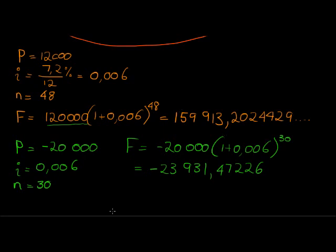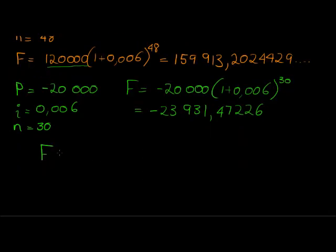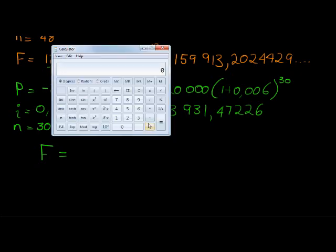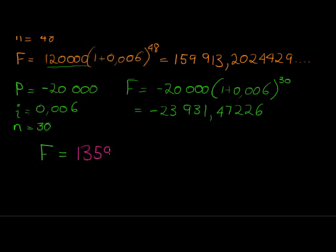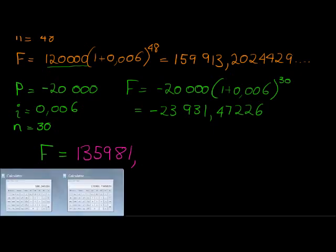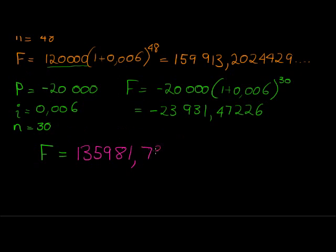If I go and take these two amounts and I add them together, that one already has the negative, let's see what we have. What is in the end the actual future value? 159,913.2024429 minus 23,931.47226, and there, rounded to two decimal places gives me 135,981.73. And there we go, that is the amount that will be in the account at the end.